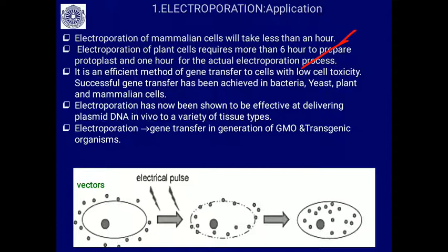A whole electroporation process will be completed within an hour. It is an efficient method of gene transfer to cells with low cell toxicity — we are not using any toxic materials or chemicals. It is a low toxicity method that brings successful gene transfer in bacteria, yeast, plant cells, and mammalian cells. Electroporation has now been shown effective at delivering plasmid DNA in vivo in a variety of tissue types.